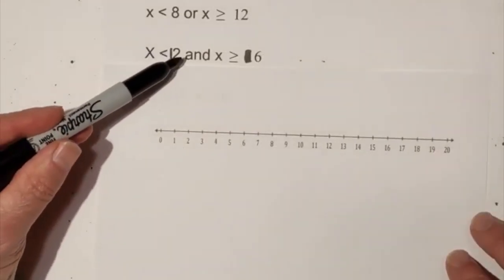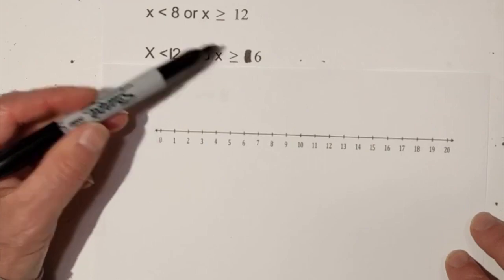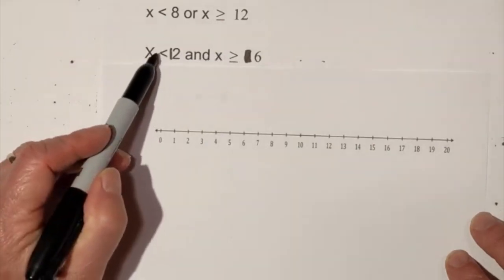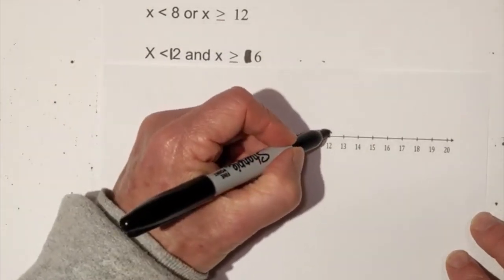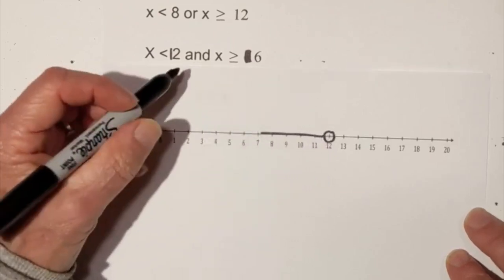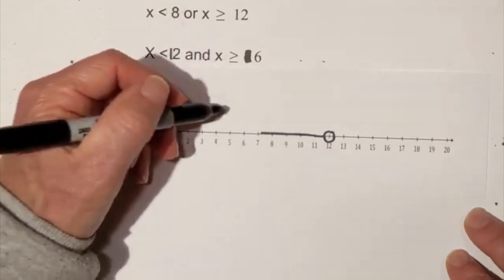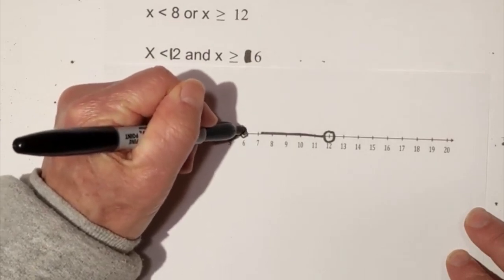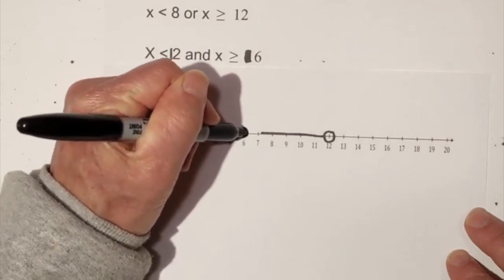It is less than 12 and at the same time greater than or equal to 6. So let's start at less than 12, remember it's going to be open so it does not include 12, and then it's going to be greater than or equal to 6.